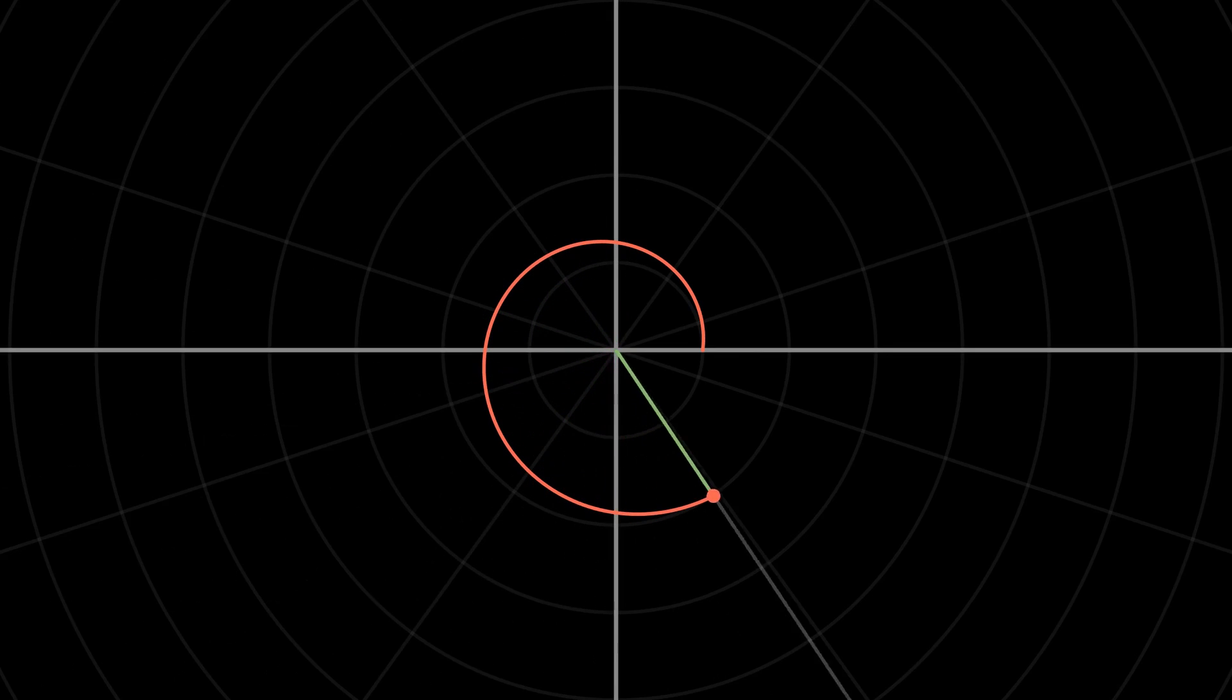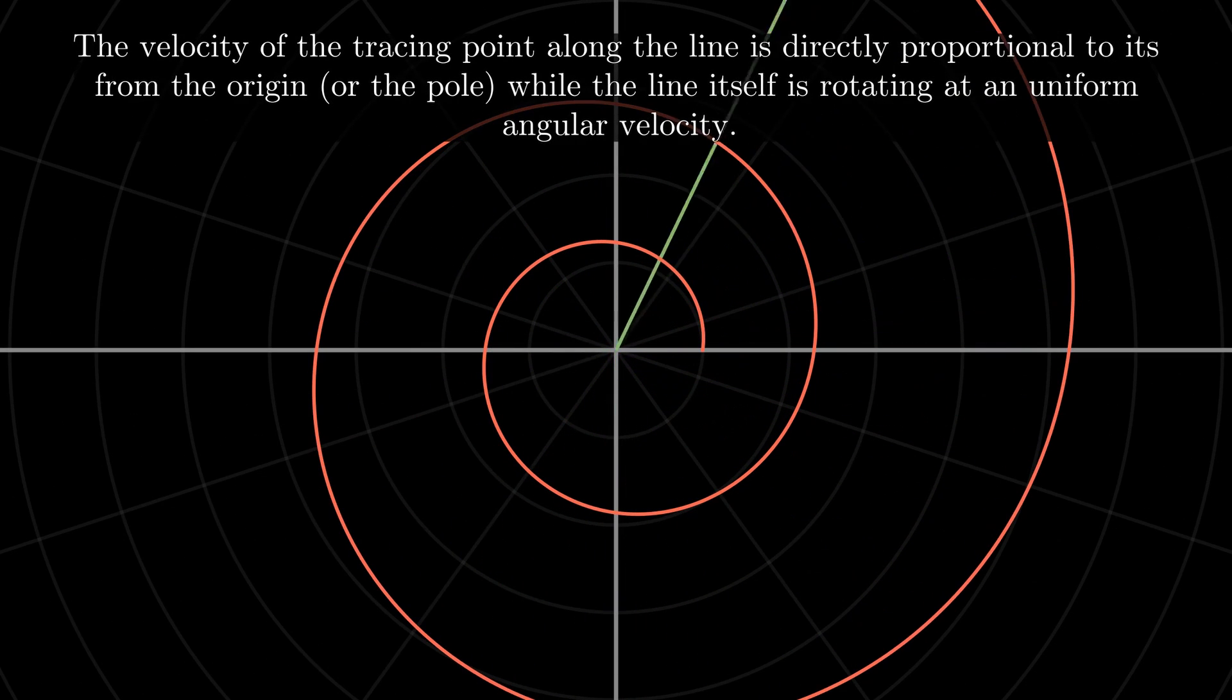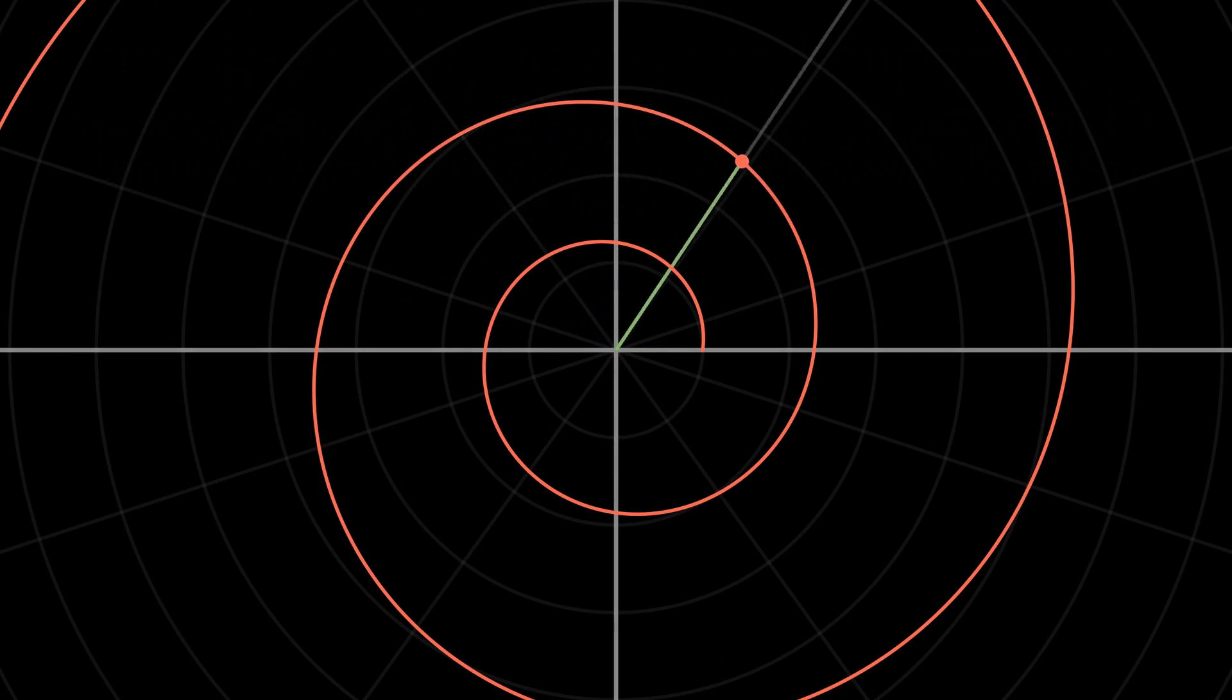A logarithmic spiral is a curve traced by a point moving along a straight line such that its velocity is directly proportional to its distance from the origin, while the straight line itself is rotating with a uniform angular velocity. The curve so described has many fascinating properties that it appears frequently in nature.